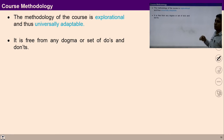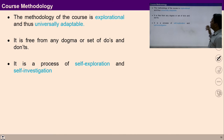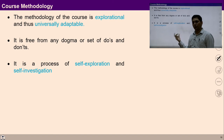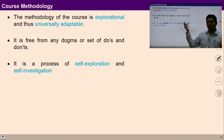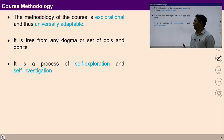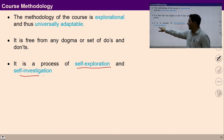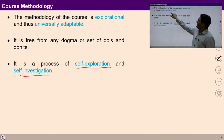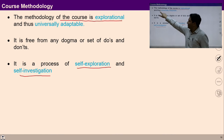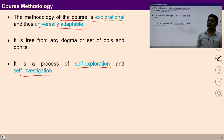Now we can discuss the course methodology. The course methodology is similar to what we are using from UHV 1, UHV 2, and UHV 3. All course content will be put in the form of proposals and you have to verify whether it is naturally acceptable to you or not. You have to self-explore and self-investigate whether the given proposals are sufficient for a fulfilling life. The methodology of this course is explorational and thus universally adoptable.